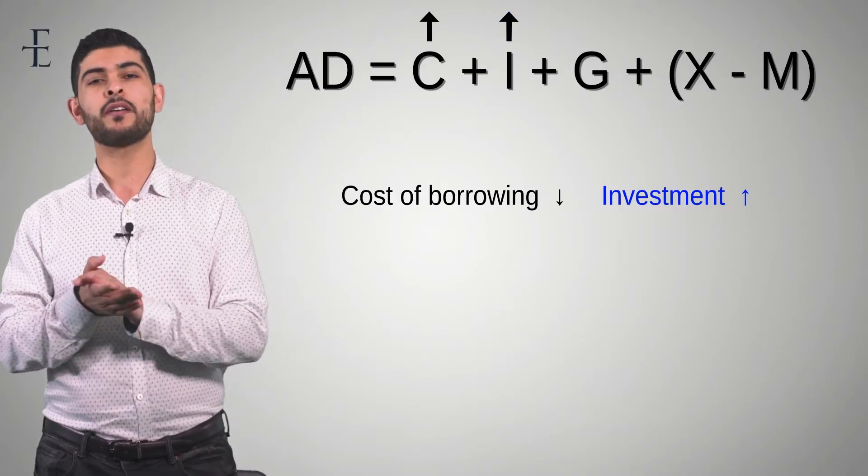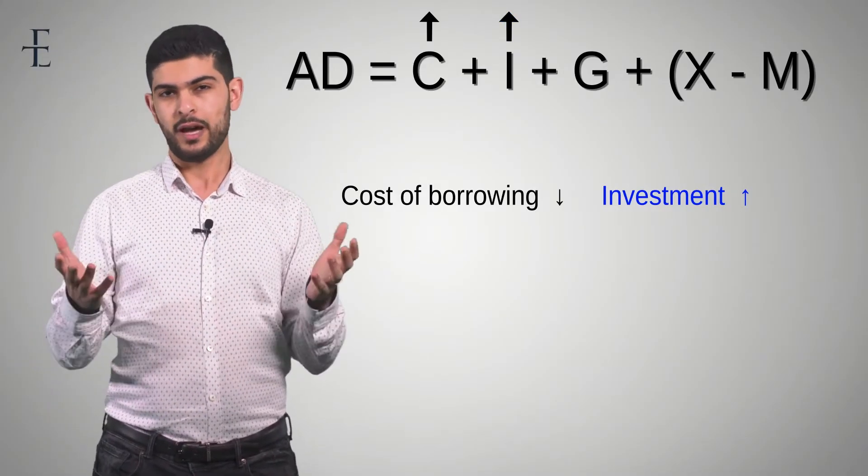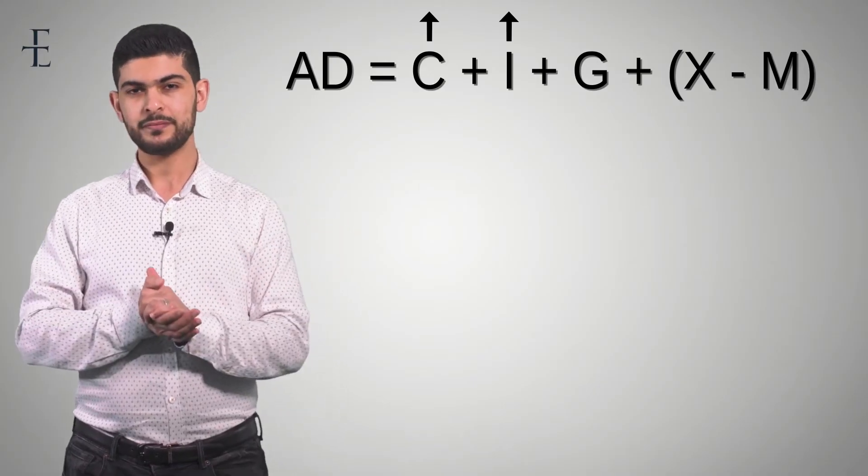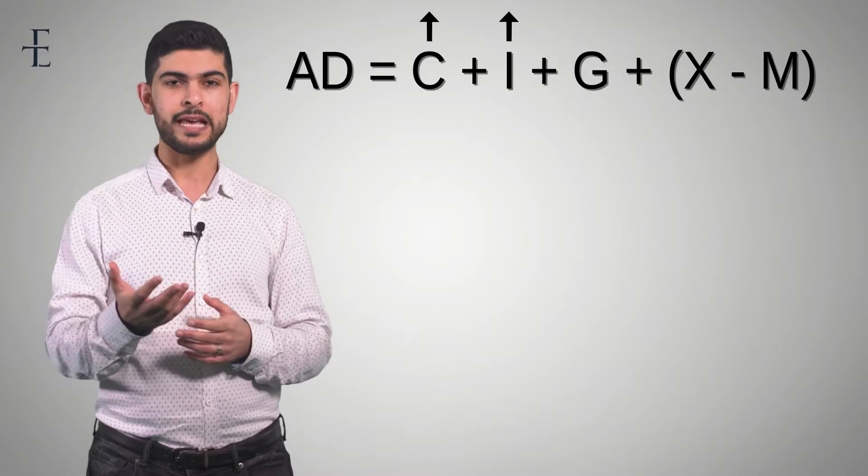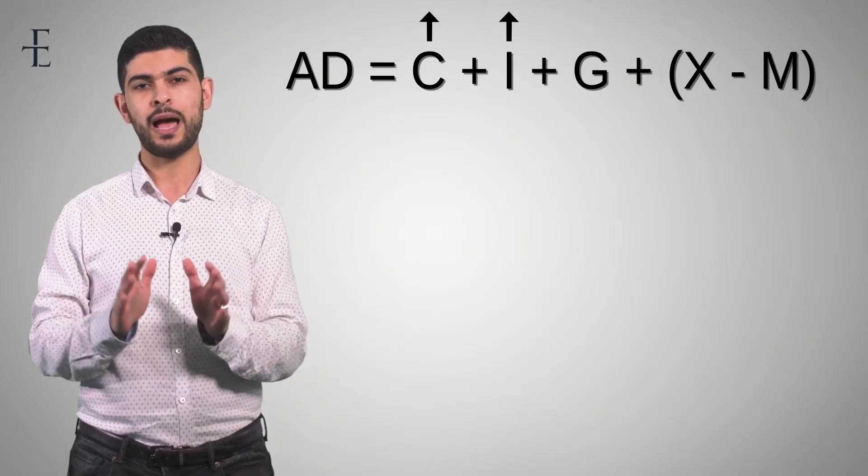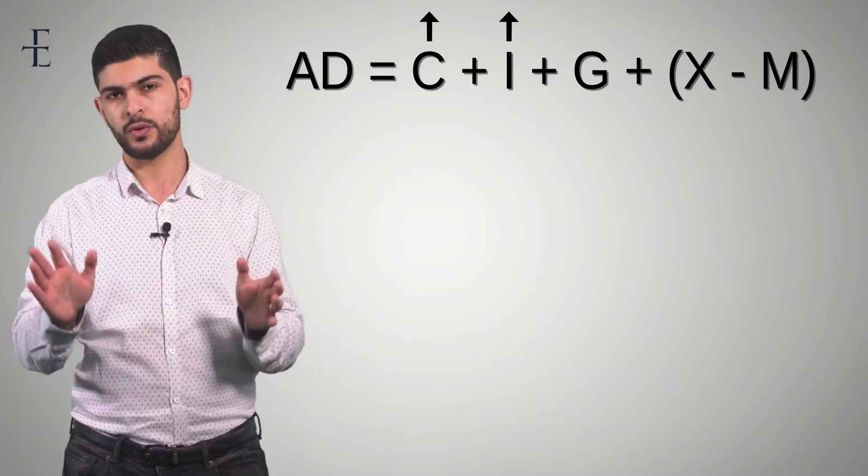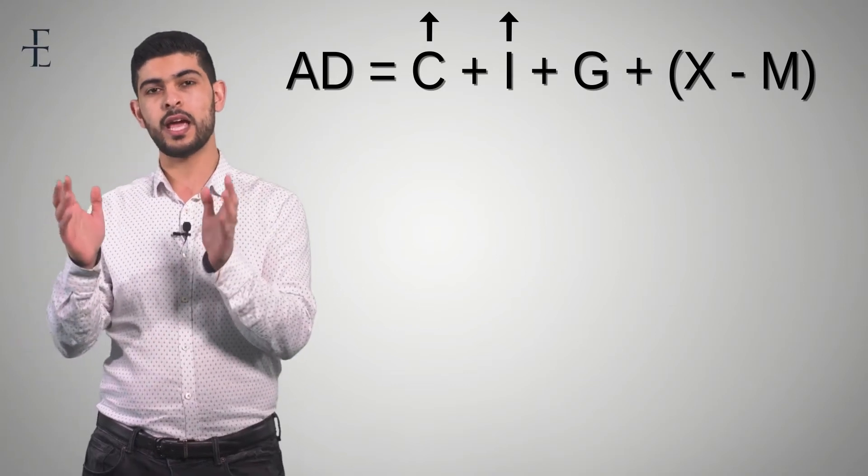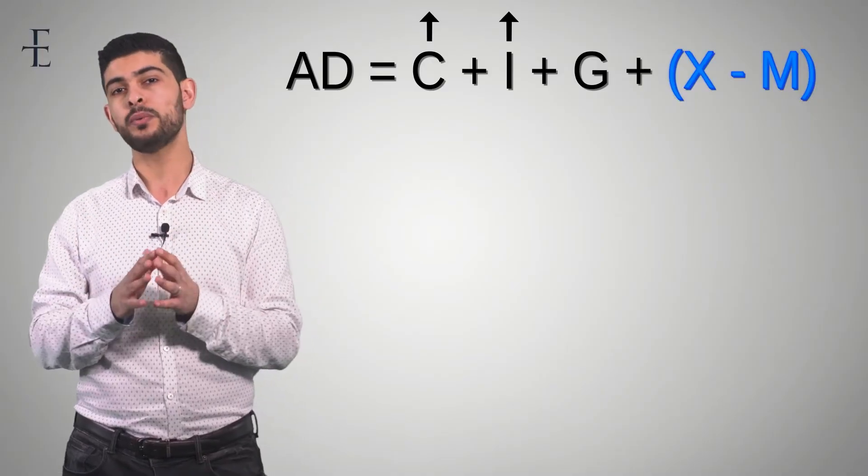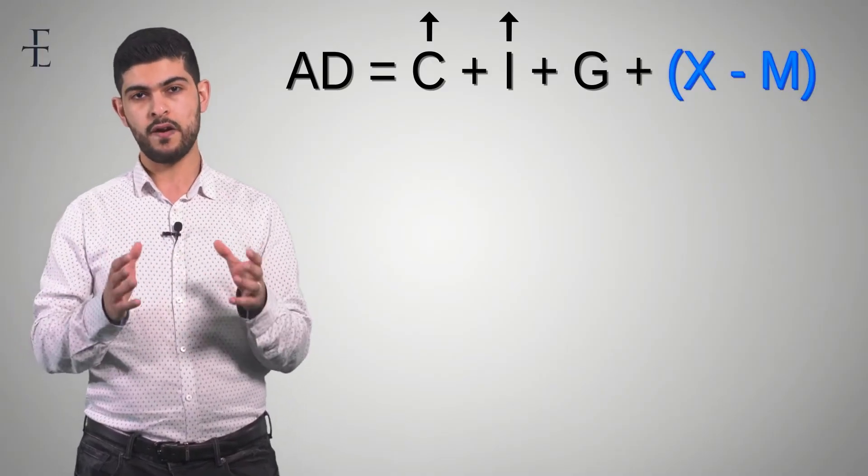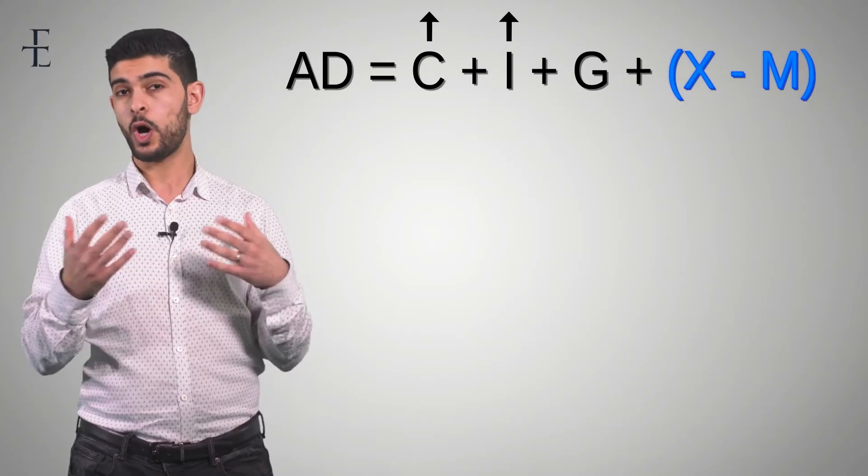The next component of aggregate demand is government spending. Now, what happens to government spending? The answer is nothing, nothing directly anyway. There might be an indirect impact, but nothing directly will happen to government spending. So you can kind of just ignore it. That leads us into X minus M, exports minus imports. And before we analyze what happens to exports and imports, we need to discuss a very important concept known as hot money.